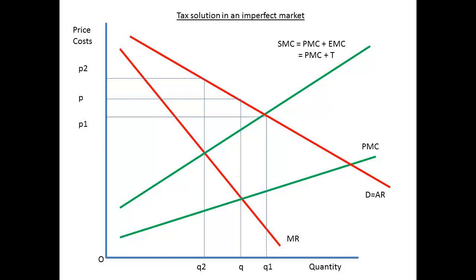Before any tax is added, the output is Q at a price of P. The Pareto optimal would be where the new marginal cost, the SMC, meets the demand curve — the output would be Q1 at a price of P1. The tax causes the firm to reduce output to Q2 and raise the price to P2.